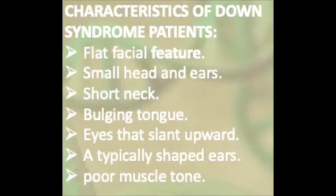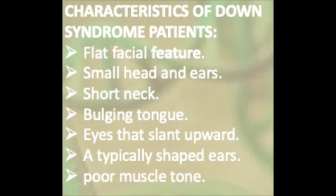What are some of the characteristics of Down Syndrome patients? Number one, normally they have flat facial features like this. The head is small, the ears are also very small, and they have a short neck and a bulky tongue like that.